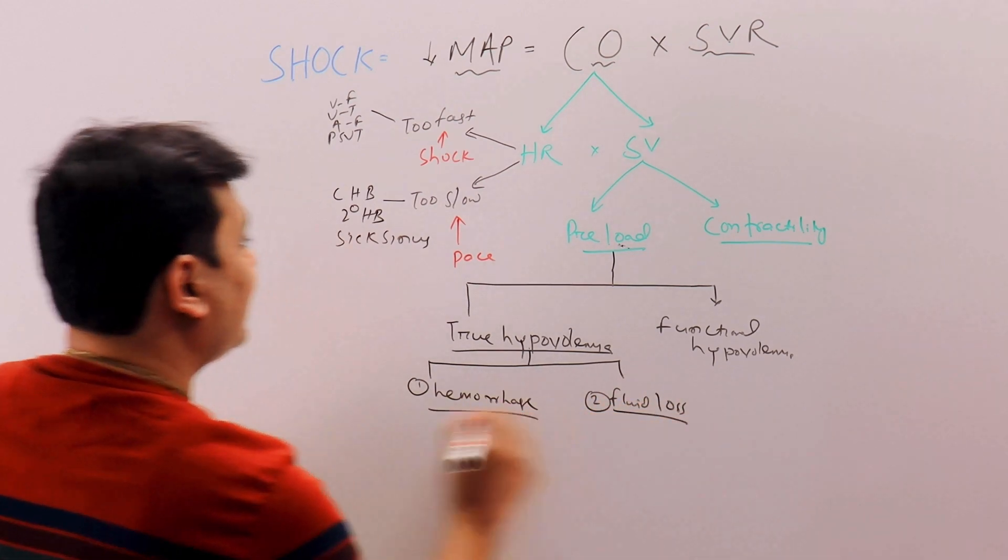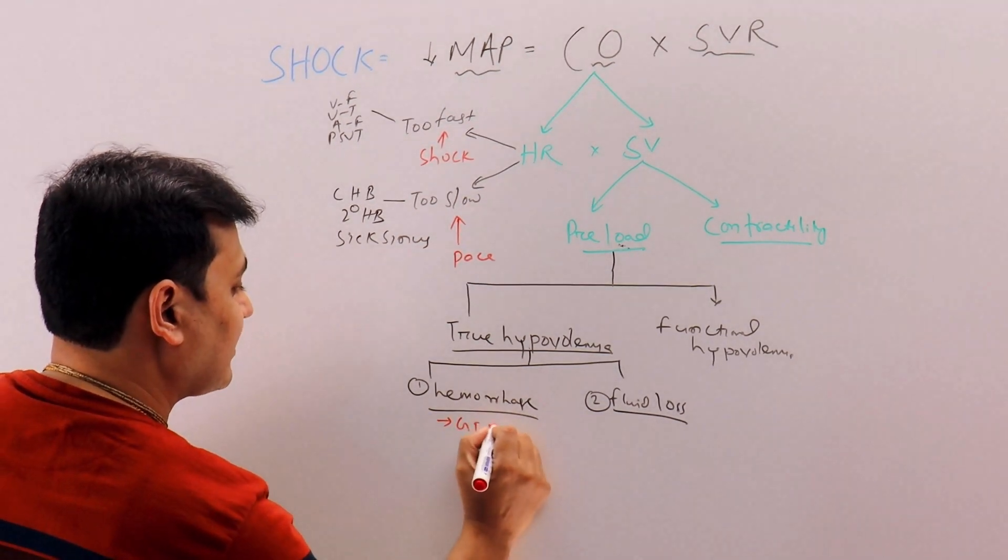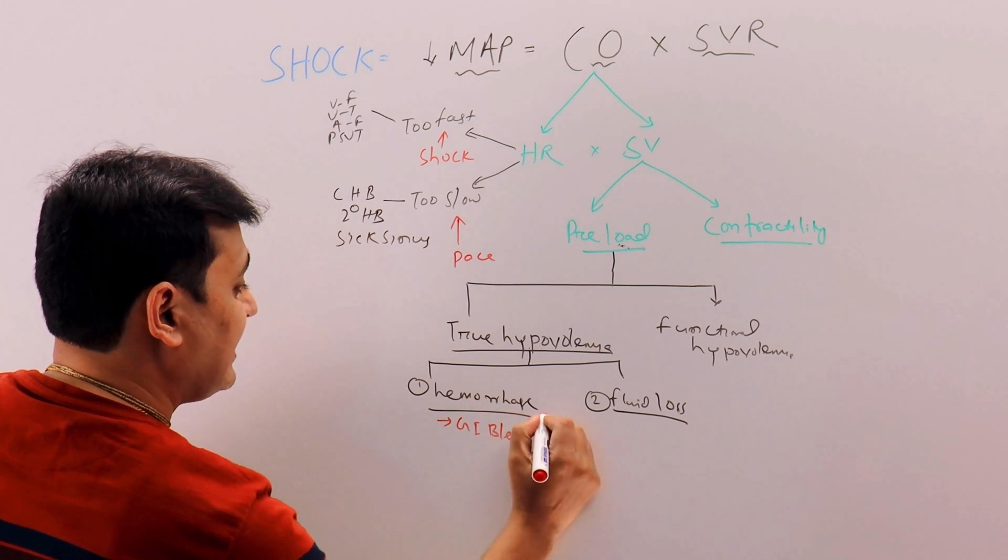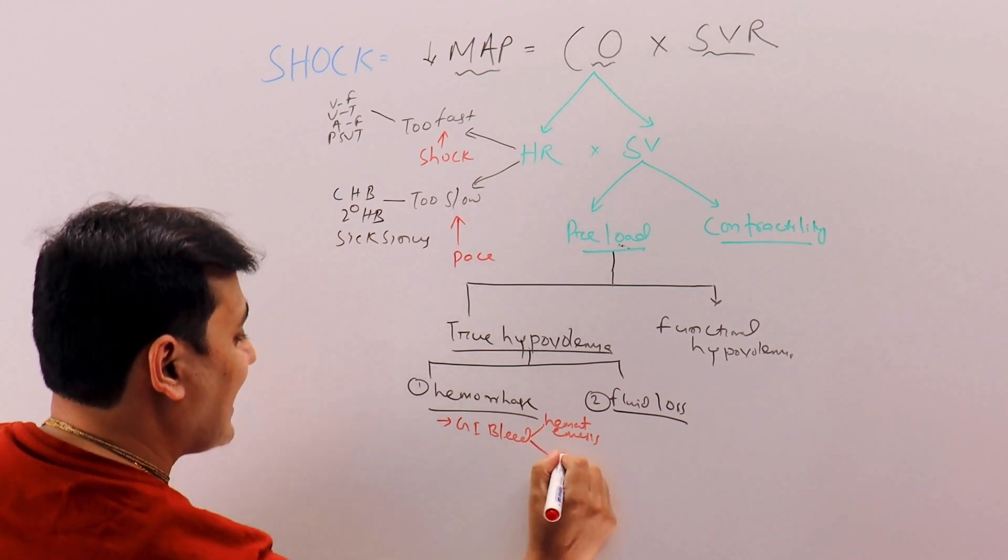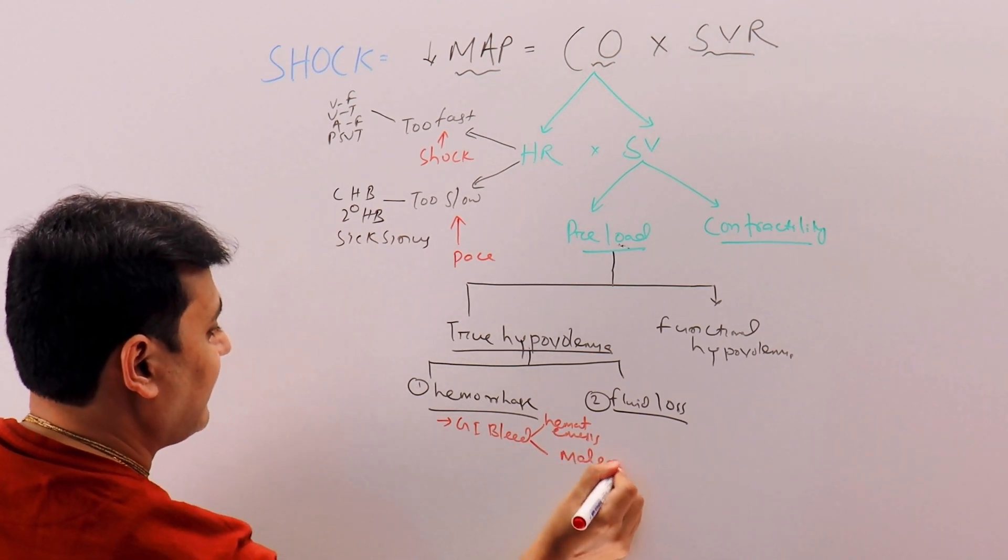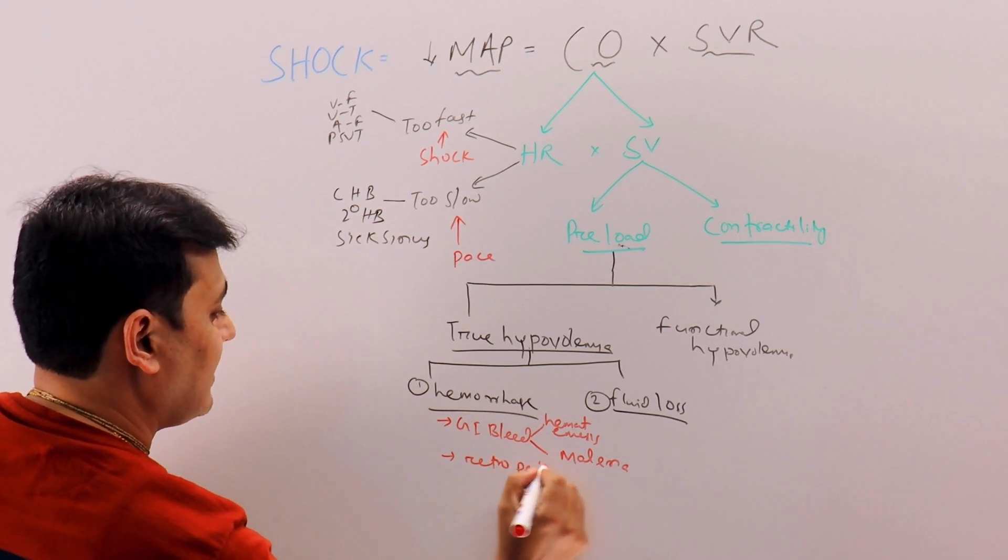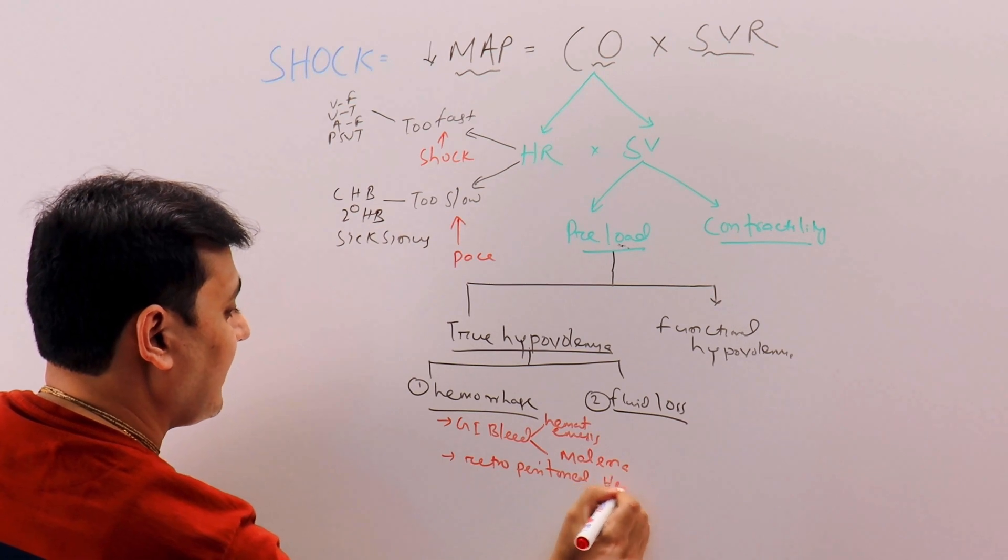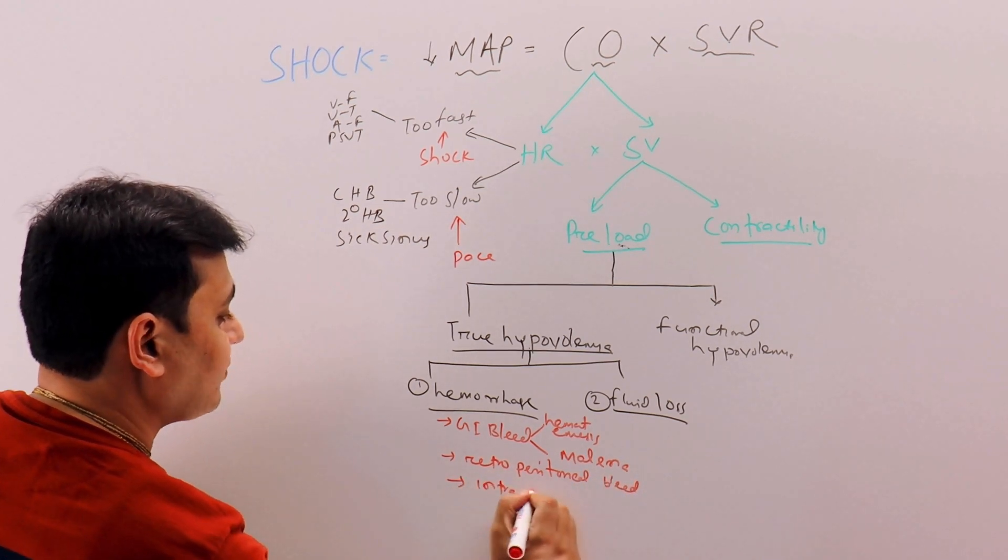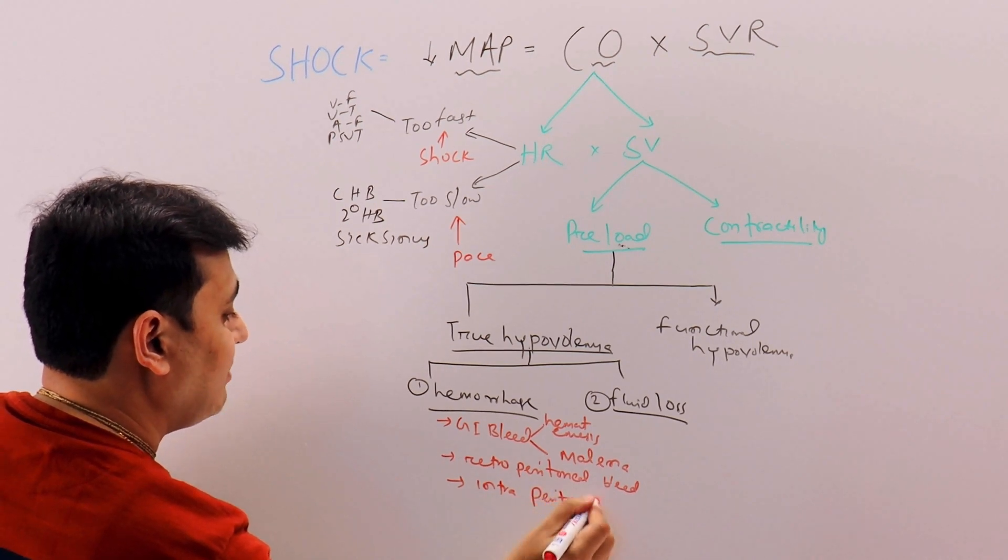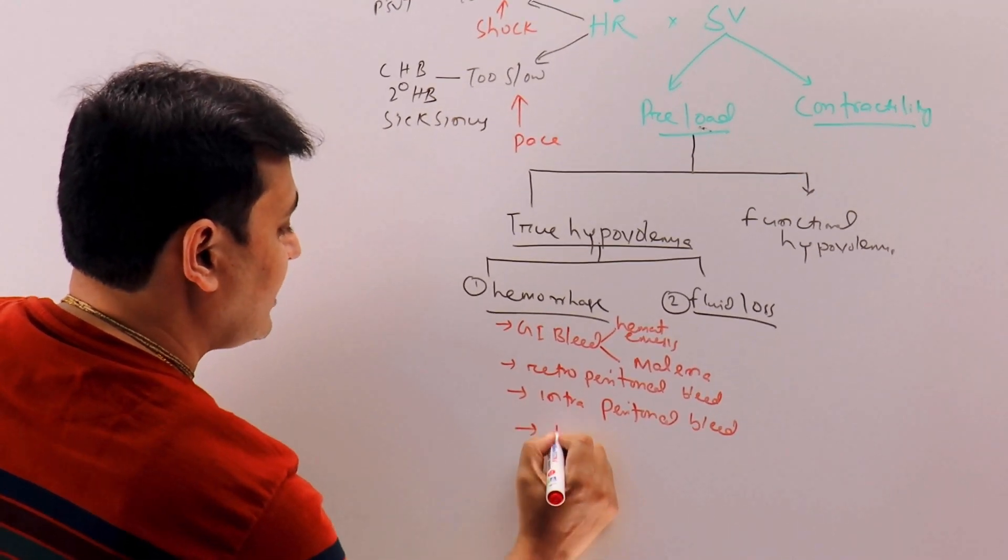So here in the hemorrhage part we can have GI bleed - we can have hematemesis or you can have melena, or you can have a retroperitoneal bleed, or you can have intraperitoneal bleed, or you can have hemothorax - actually blood loss from the body.